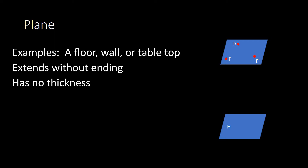A plane also has no thickness — just like a point had no size and a line had no thickness, a plane technically has no thickness. In addition, a plane would have no edges. Because if a plane keeps going forever without ending, there's never going to be a point where it stops and has an edge. So a table would have edges, and that's why it's not technically a plane. Something that keeps going forever would not have any edges.